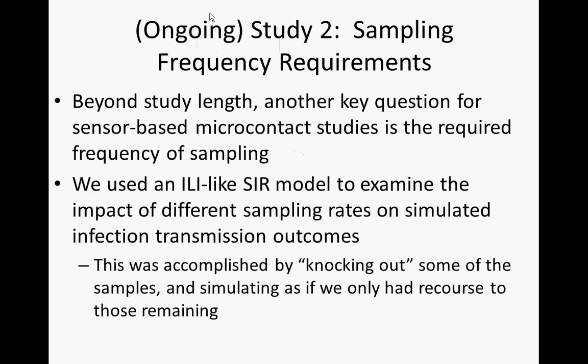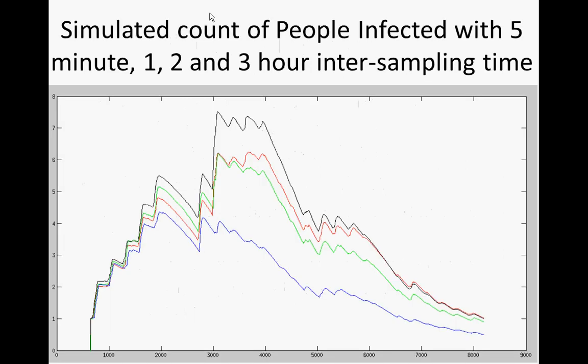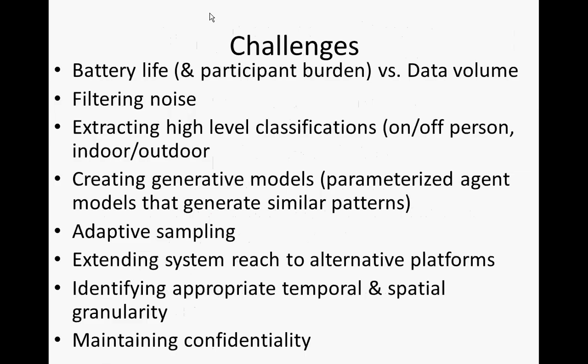A second study looked at the impact of sampling frequency. We used a similar model and found that going from five-minute sampling of contact patterns to less frequent sampling — say every hour or every three hours — even though that's still sampling a lot more information about contact patterns than you could gain through traditional survey instruments, it really impaired the accuracy of our simulations to use that sort of down-sampled data.